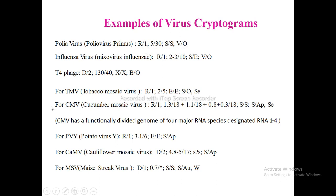For Cucumber Mosaic Virus (CMV), it is also an RNA virus, single-stranded, with its genome split into 4 different RNA species separated by plus signs: 1.3 million, 1.1 million, 0.8 million, and 0.3 million, each with about 18% nucleic acid content. It is spherical in shape and the nucleocapsid is also spherical. The host is seed plants (S) and the vectors are aphids (AP), with seed transmission (SE) also observed — so two modes of transmission.